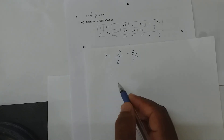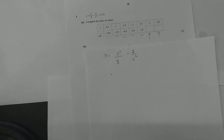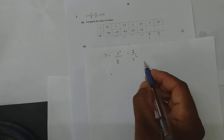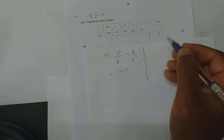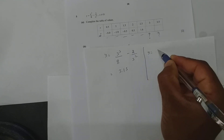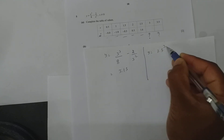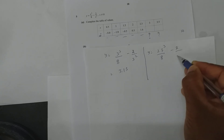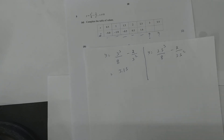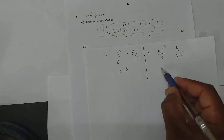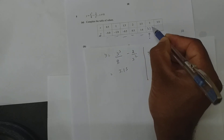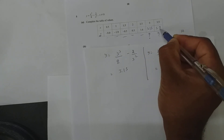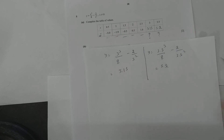For x = 3, you get approximately 3.15. Similarly, when x = 3.5, substitute 3.5³/8 - 2/3.5² and the answer you get is 5.2. So here it is 3.15 and here it is 5.2. For two marks it is 4.